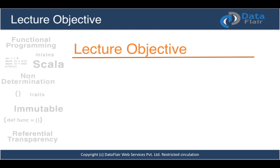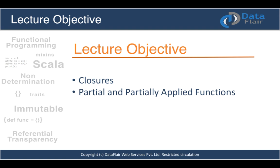In this lecture we will look at the closures concept. Almost all functional languages have this concept — Haskell has closures, and Scala uses closures a lot. There are scenarios when your function might need a parameter that is not passed as a formal one but resides in the current scope — that is called a closure.